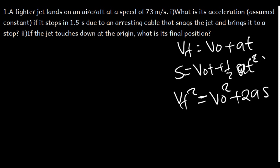Now we need to come up with the data. The information we have been given: the initial velocity is 73 meters per second, because the fighter jet lands at that speed. Since it came to a stop, the final velocity is going to be zero.